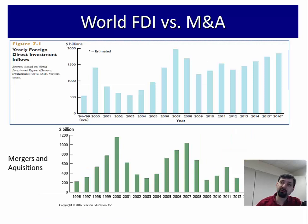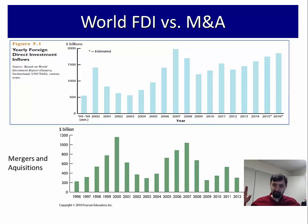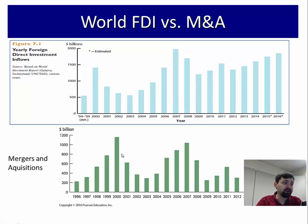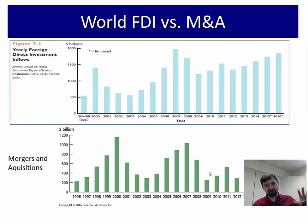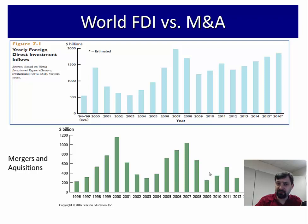It's important to remember that FDI is not only starting new companies but also buying companies. You can invest overseas by building a new company — what we call a green field investment — or by acquiring an existing company. When you look at FDI dynamics over time and compare them with mergers and acquisitions, the two are virtually identical. A huge portion of FDI is actually mergers and acquisitions, which makes sense because acquiring one company by another looks the same on paper.